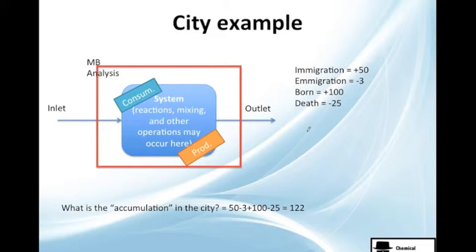Well, you just need to do this addition. It will be 50 minus 3 plus 100 minus 25, which I have here. And the number gives you 122. What does that mean? This means, since it is positive, you are accumulating 122 persons per year.